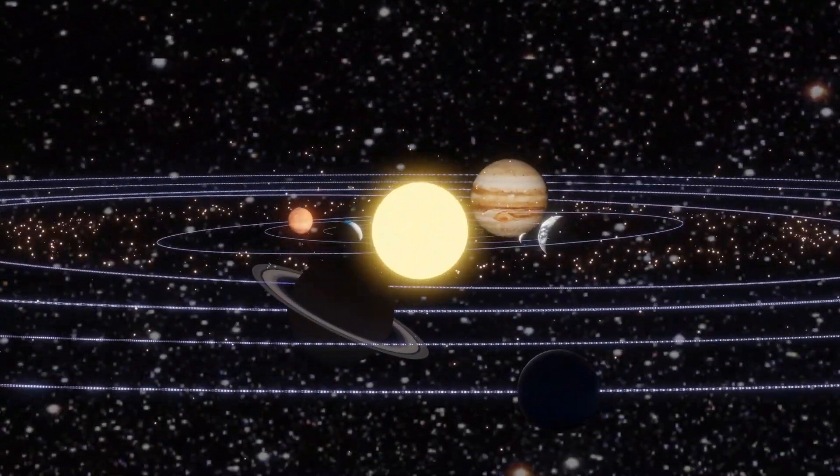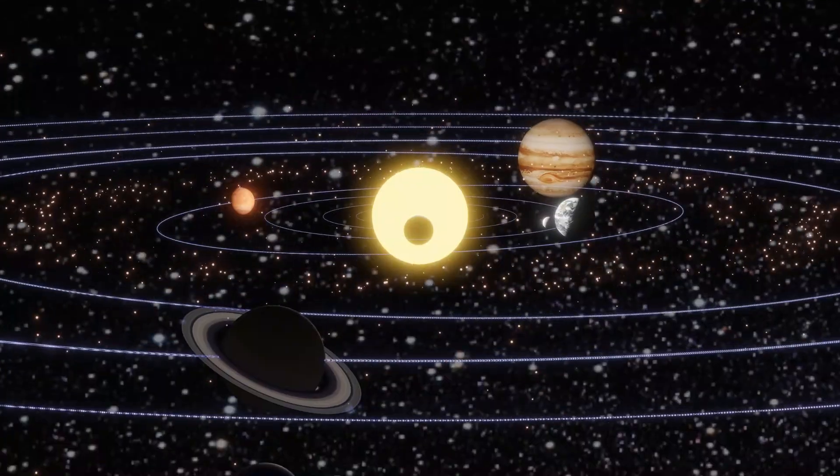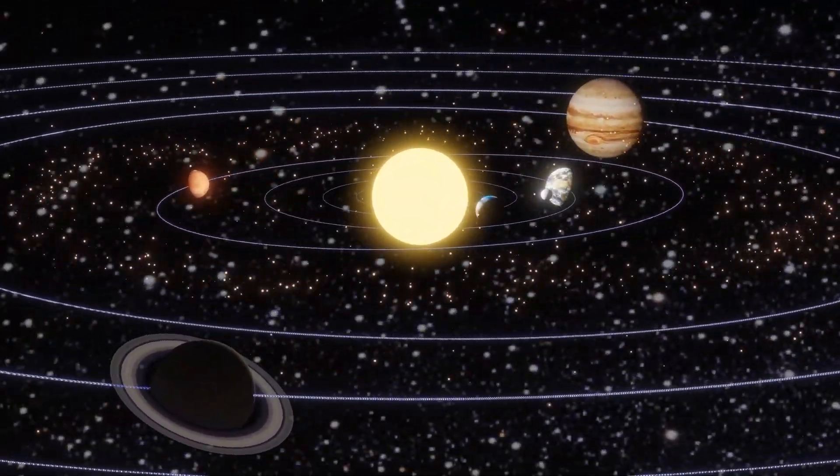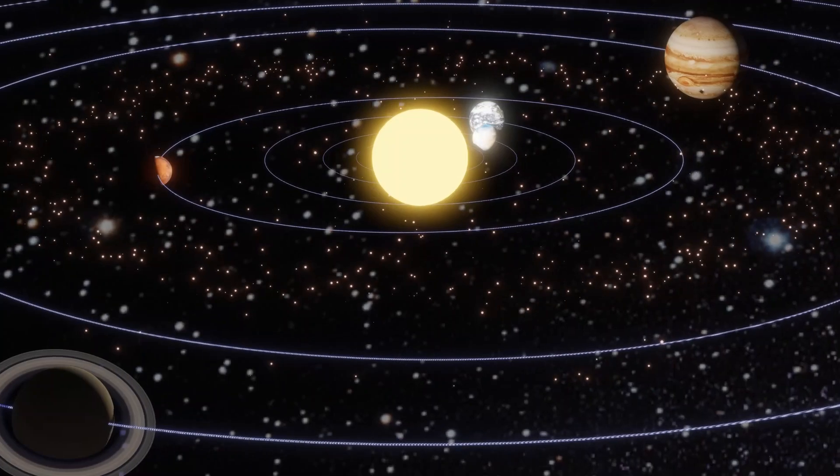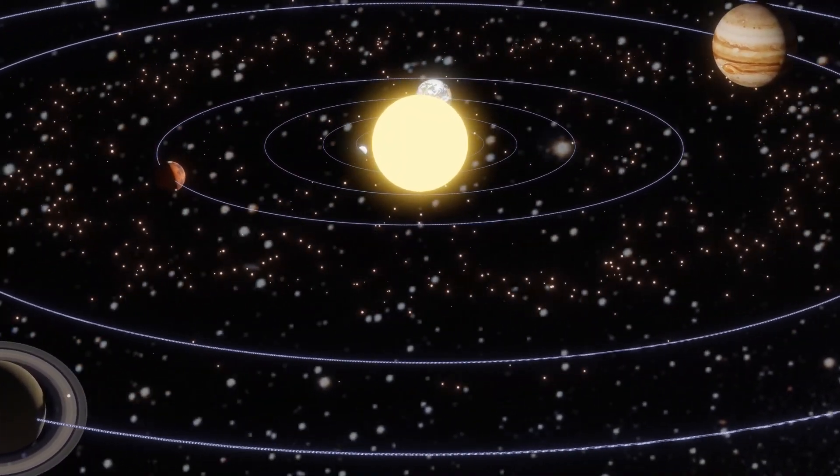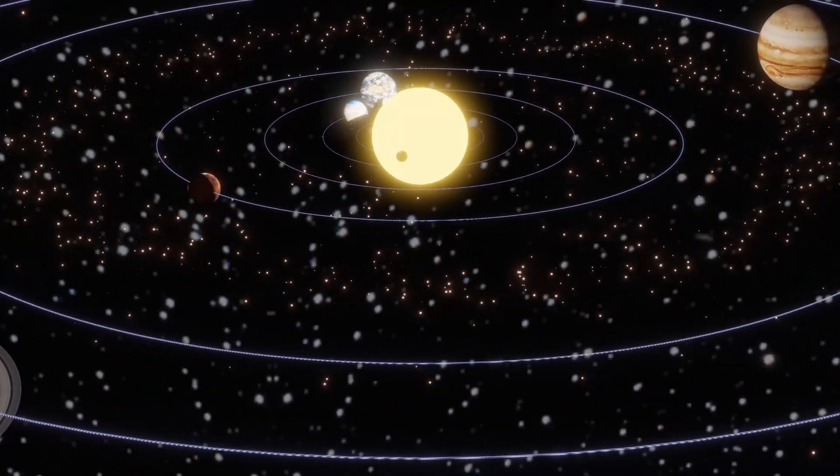The moon, our closest neighbor, is 384,000 kilometers away. A distance that light covers in just over a second. Yet to us, it feels impossibly far.